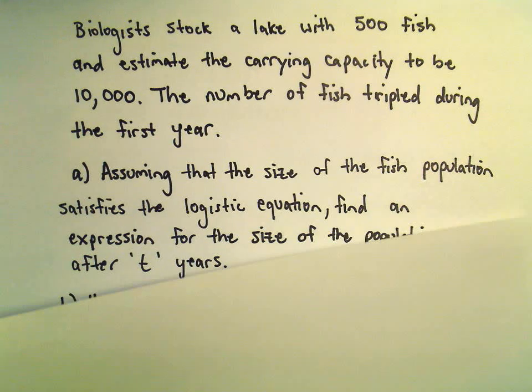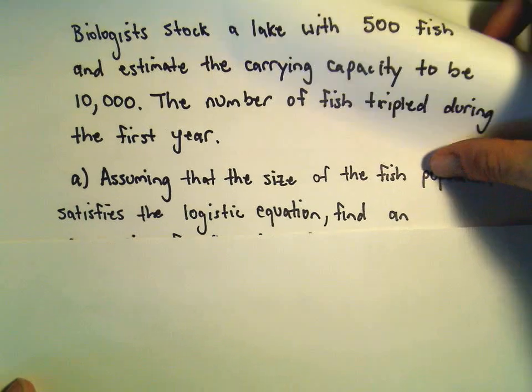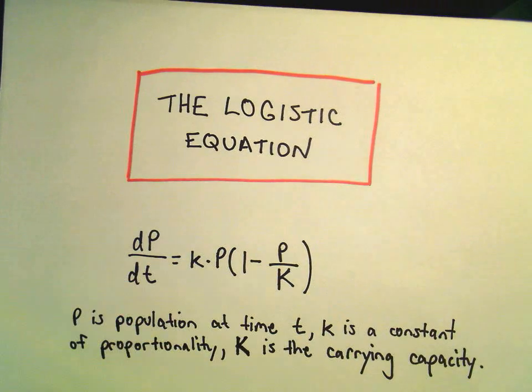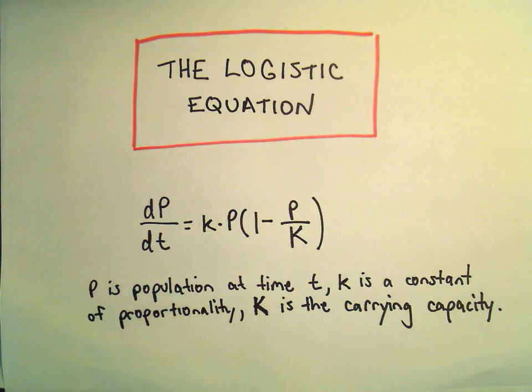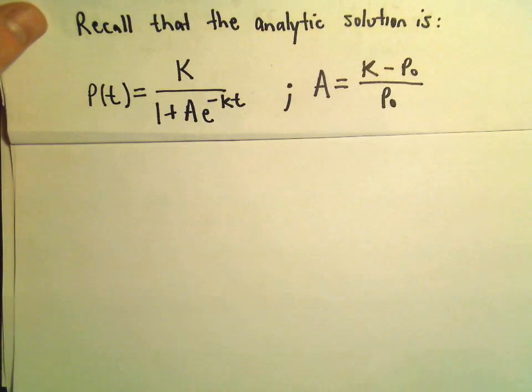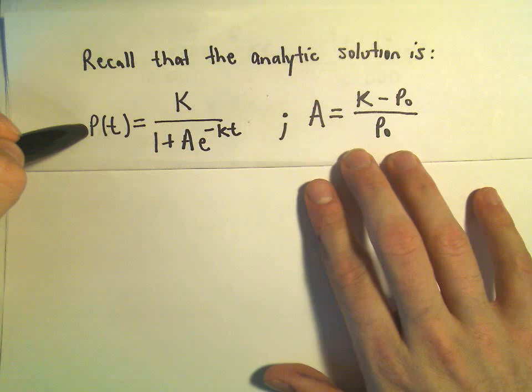Okay, so in a separate video we actually found an explicit solution to this differential equation, this logistic equation, because we notice that's really a separable differential equation. We integrated both sides and ended up finding this to be the formula for the population at some time t.